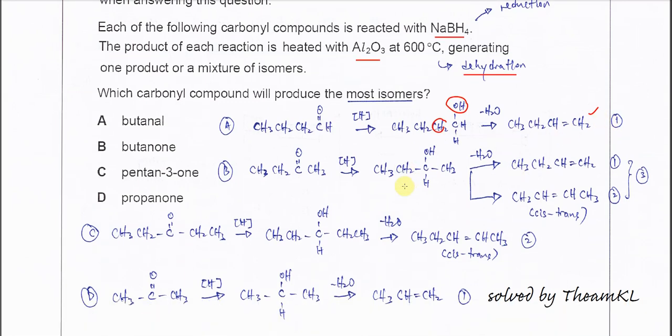After that, B, butanone. Butanone, the formula is this. First reaction again, reduction: here add one hydrogen, here add another hydrogen, formed butan-2-ol.